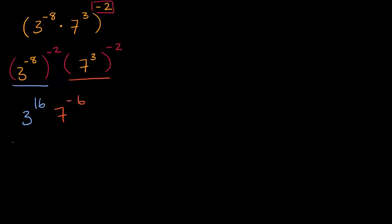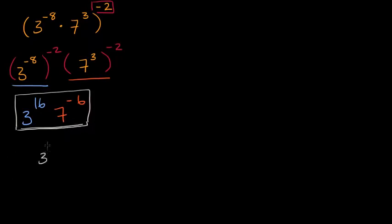This would be about as much as you could simplify it, but you could rewrite it different ways. Seven to the negative six is the same thing as one over seven to the sixth. So you could write it as three to the sixteenth over seven to the sixth.